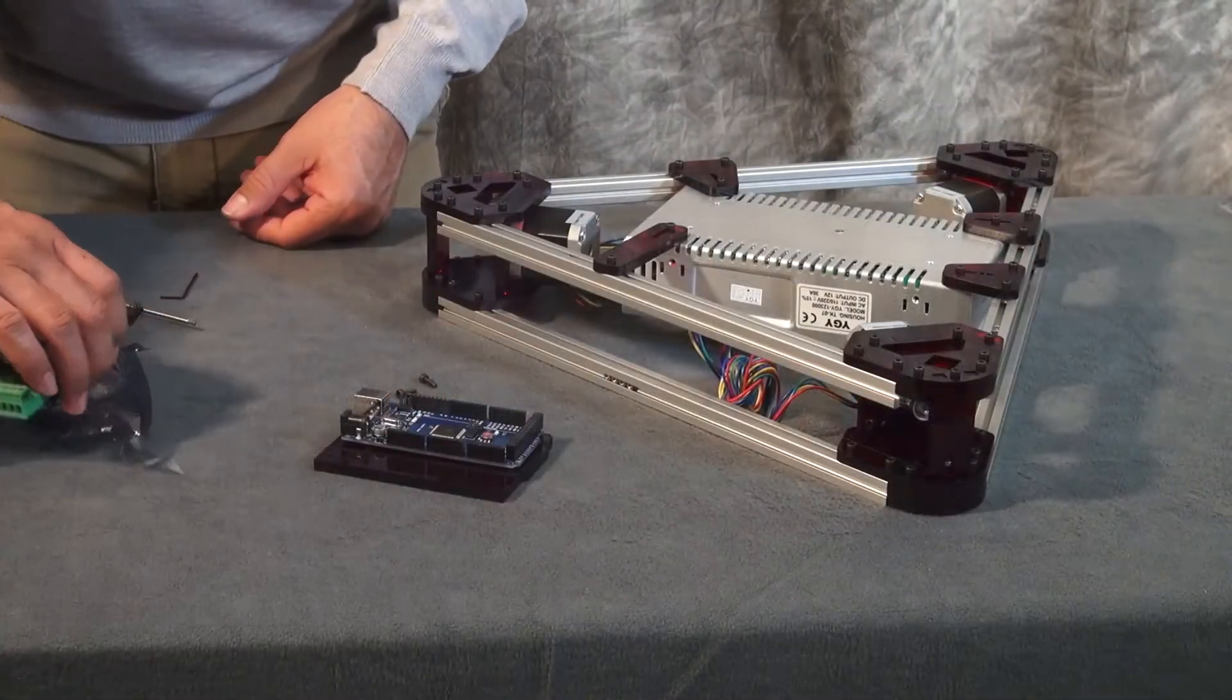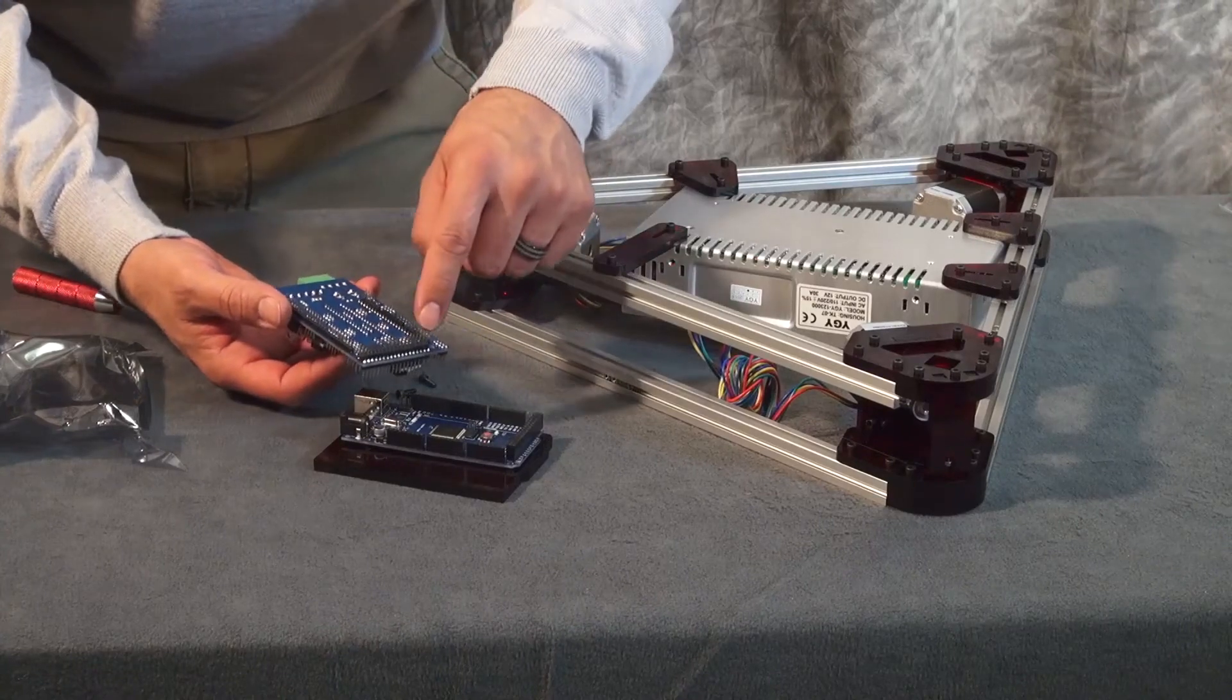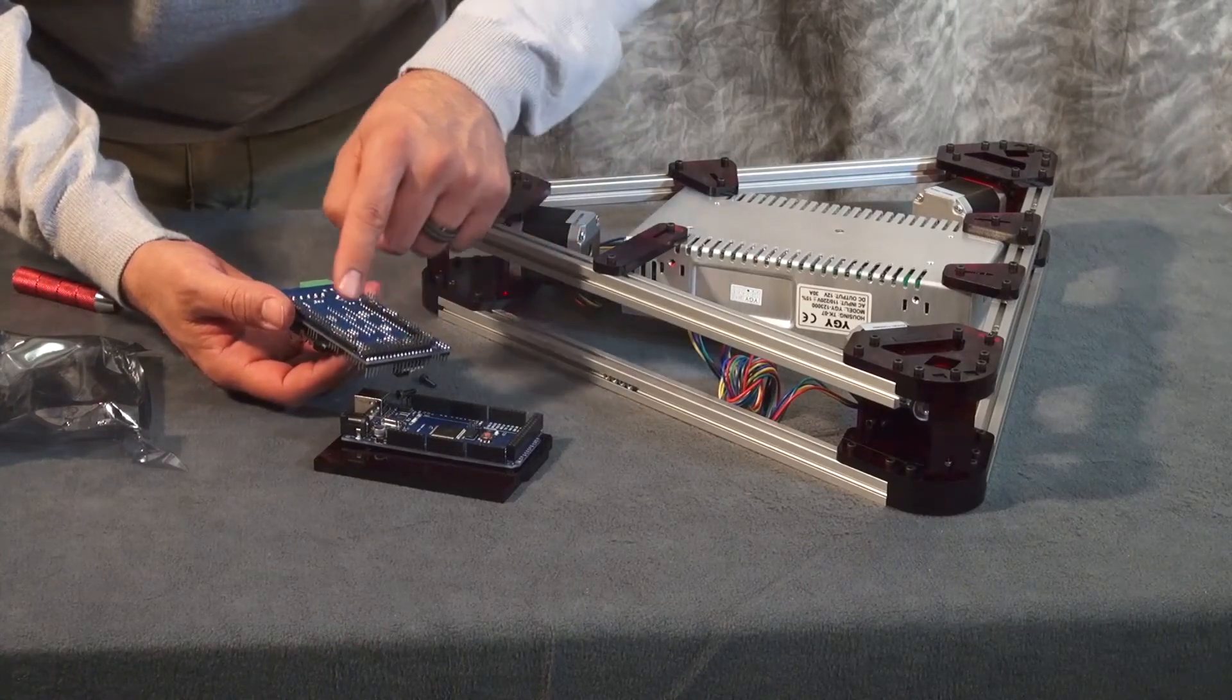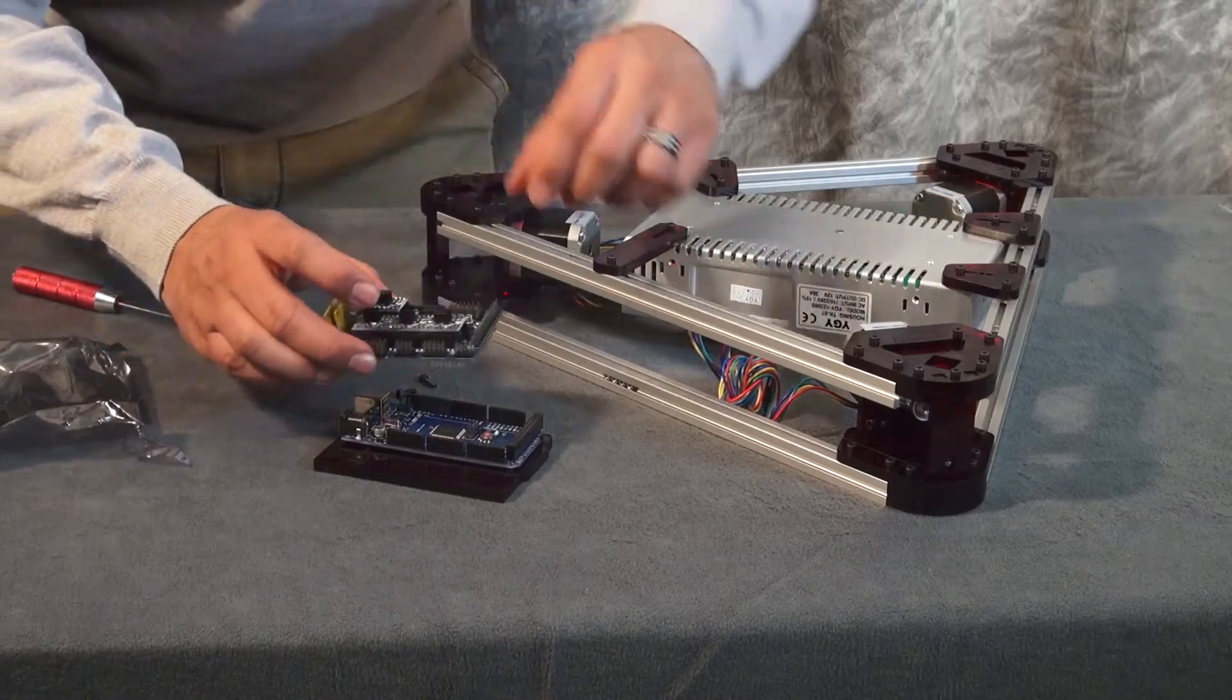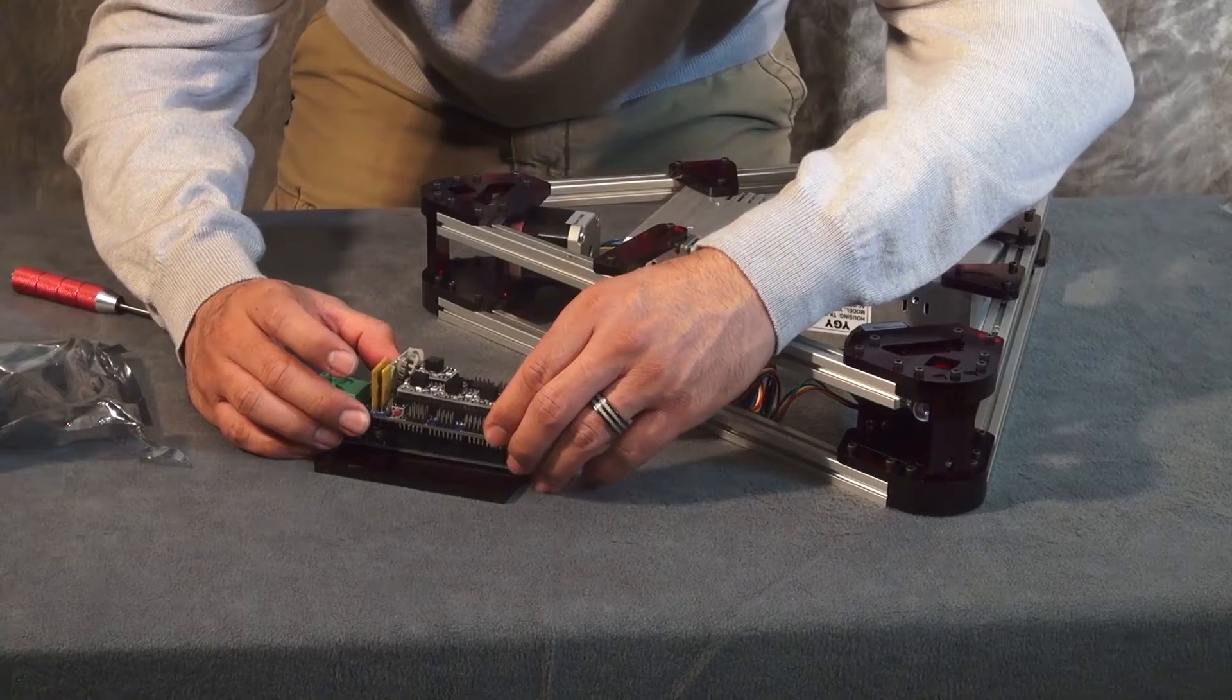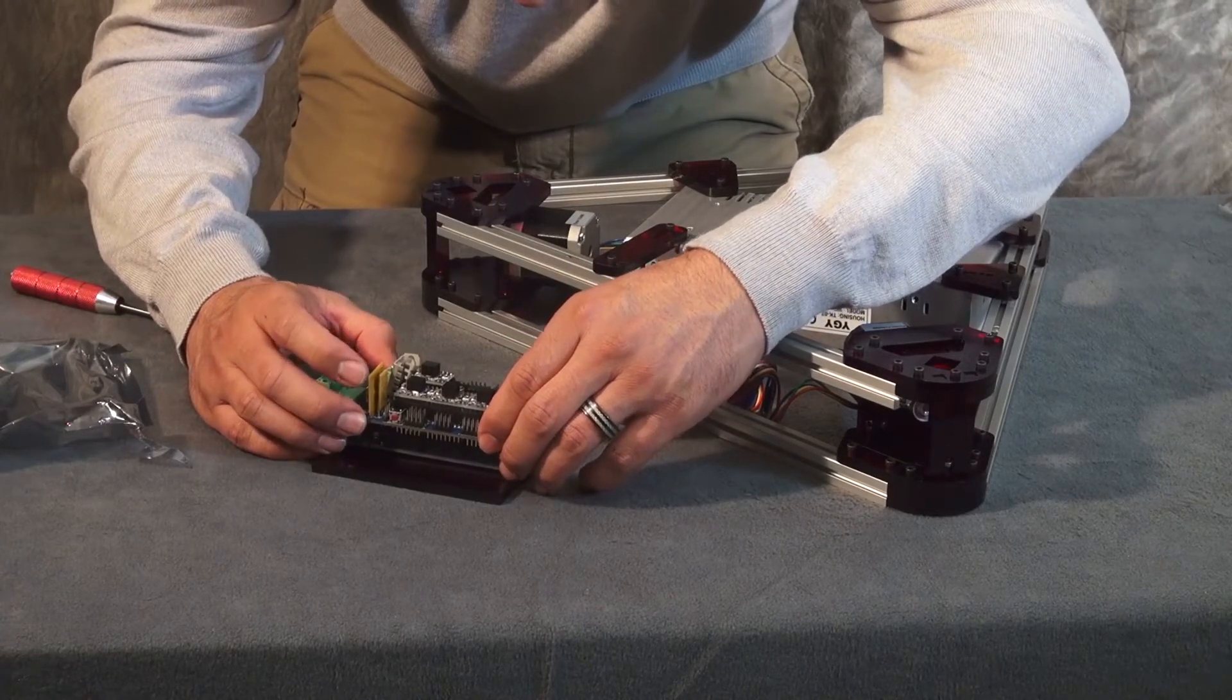All right, now to install your RAMPS board onto your Arduino board, all you need to do is line up your pins with the pin lineup on your Arduino board. You want to make sure you press this down evenly, not forcing one side further down than the other.